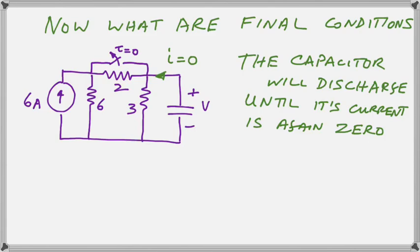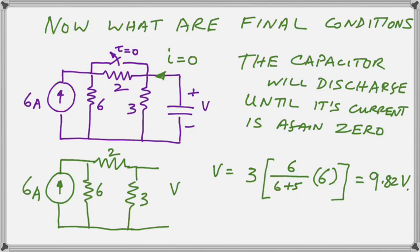Now, it just remains for us to find the final condition of the circuit after the capacitor has discharged sufficiently. Once the capacitor discharges to whatever voltage is across the voltage divider of the 2 and 3 ohm resistor, its current will drop to 0. And this is the key to the success of finding the final V in the problem. Once the current into the node has dropped to 0, the voltage across the voltage divider is obtained by that equation and it works out to 9.82 volts.